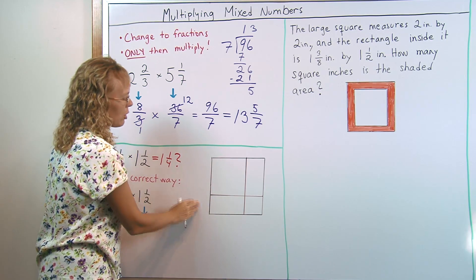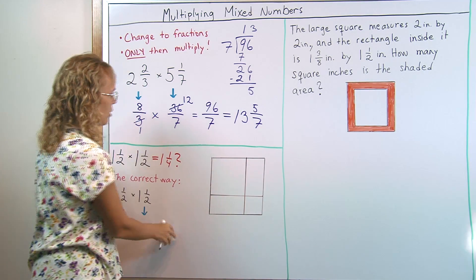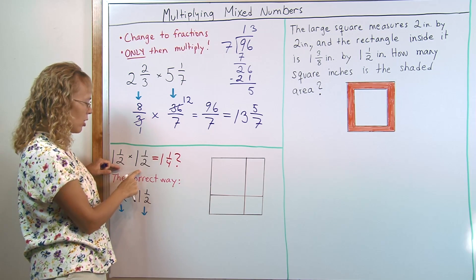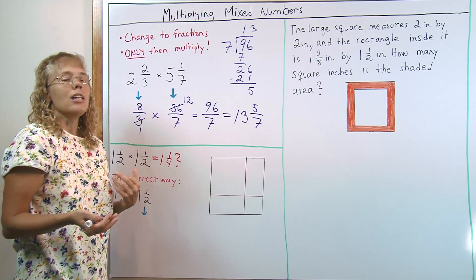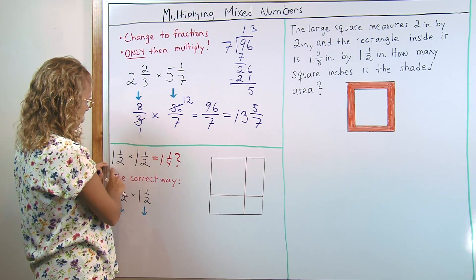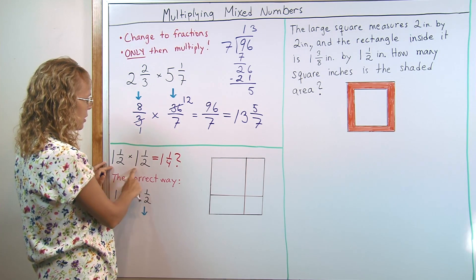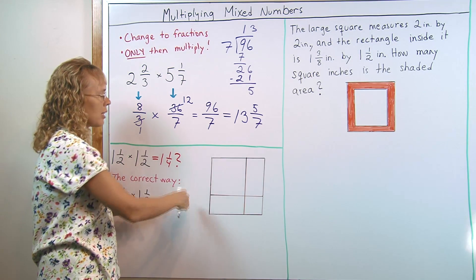But I also can show it to you using this area model. Because multiplication like this, I can model it with an area calculation. Where this is 1 side times 1 side, then the answer will signify the area.